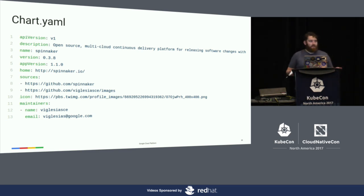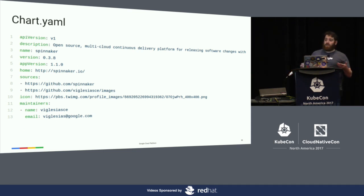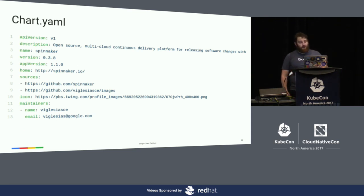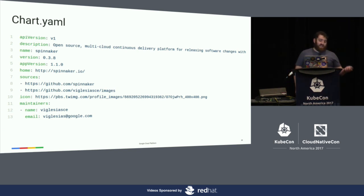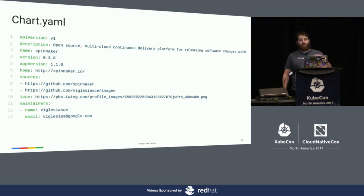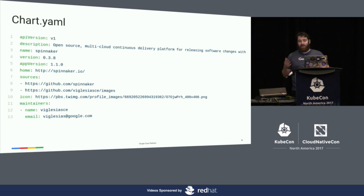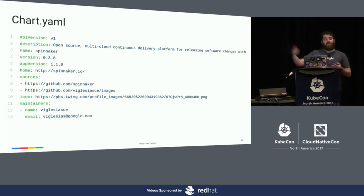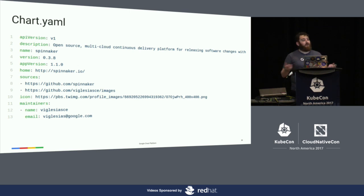The more important thing to have in your Chart.yaml is the sources — where can people go to rebuild the pieces of this? Usually people put the GitHub link to the actual project. A lot of the charts we have are open source. Did you build a custom image? Point people to that Dockerfile so they can customize it. You have an icon for visualization tools like kubeapps.com. And then you have the maintainer — the GitHub ID and email — so as maintainers we can ping them for non-trivial changes.